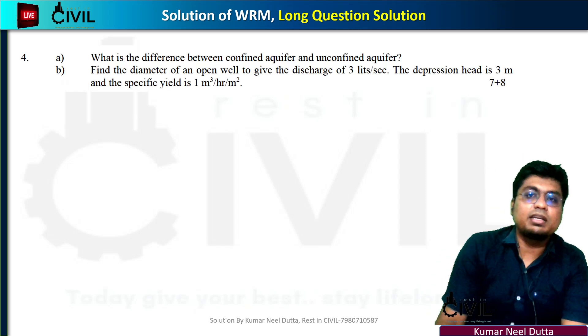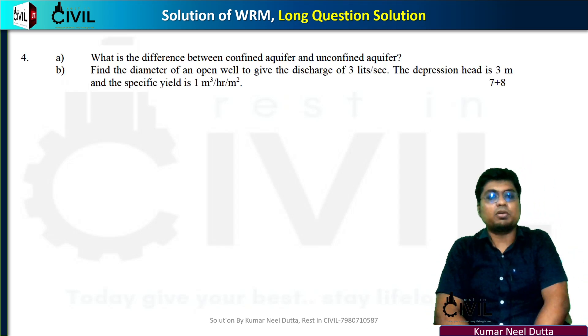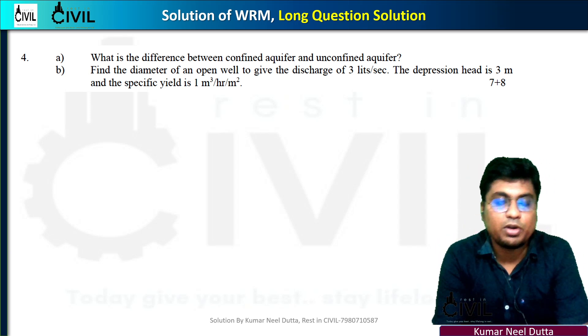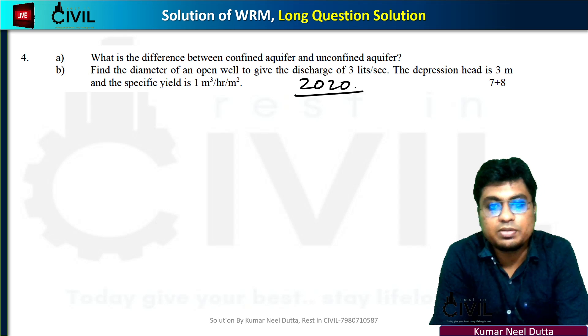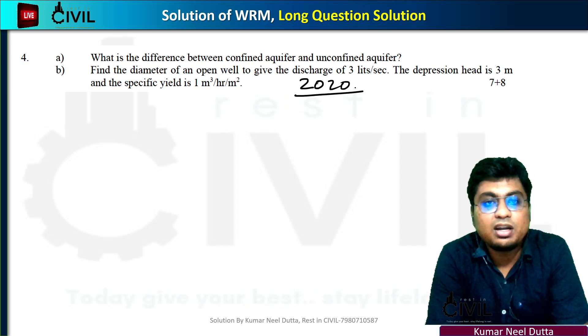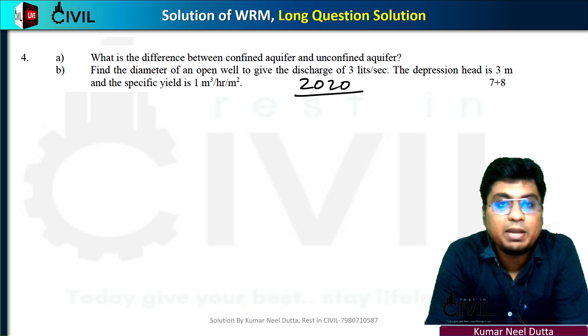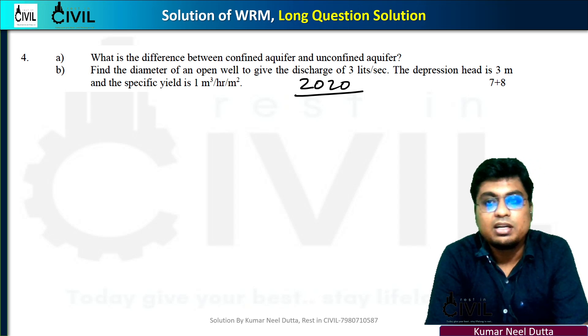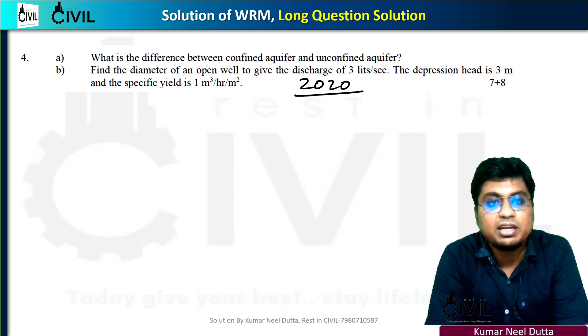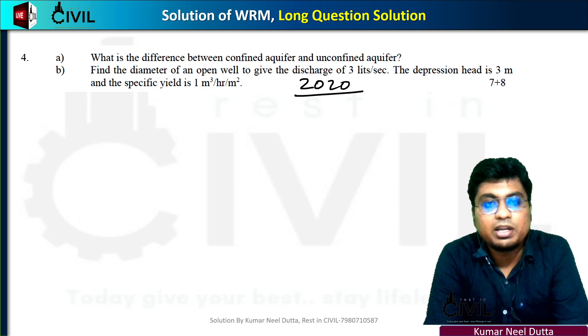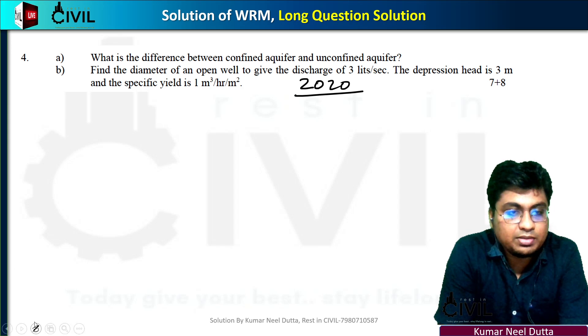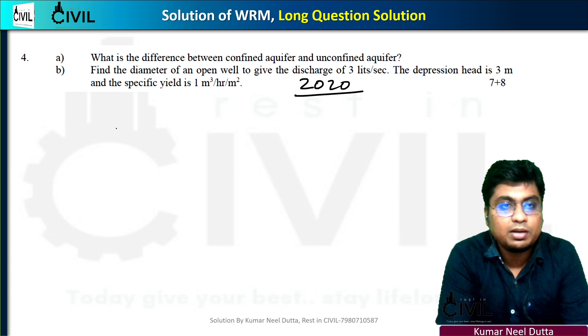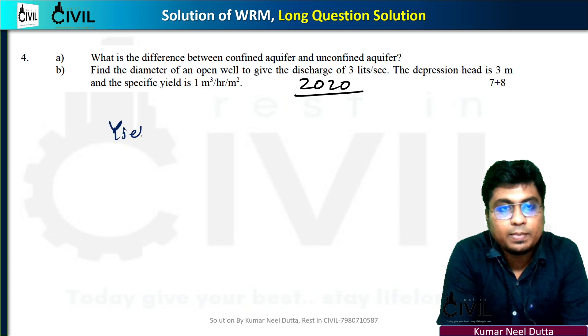The next question is: Find the diameter of an open well to give a discharge of 3 liters per second. The depression head is 3 meters and specific yield is 1 cubic meter per hour per square meter.